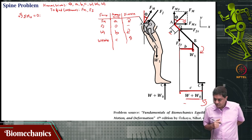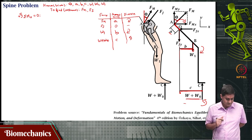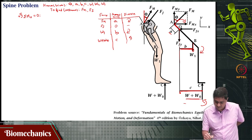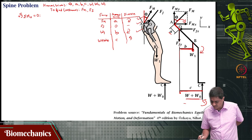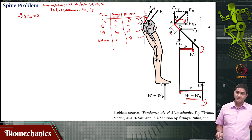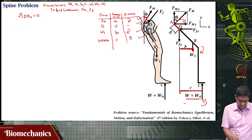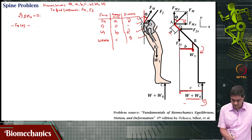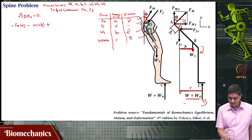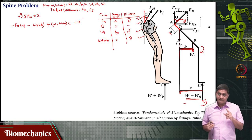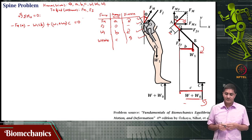Checking the free body diagram: Fm, Fj, W1, and W plus W naught are all accounted for. Writing the equation: sigma M about O equals 0 gives minus Fm times a, minus W1 times b, plus (W plus W naught) times c equals 0. This is a single equation in one unknown — Fm — since everything else is known.